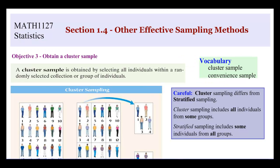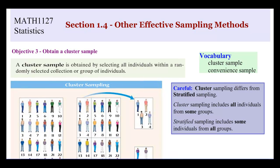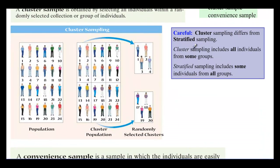Let's talk about cluster sampling. A cluster sample is obtained by selecting all individuals within a randomly selected collection or group of individuals. You could group a classroom by which row people are sitting in, or group people on campus by which building they're in. You create groups of some sort, then randomly select entire groups — all the people within those selected groups.